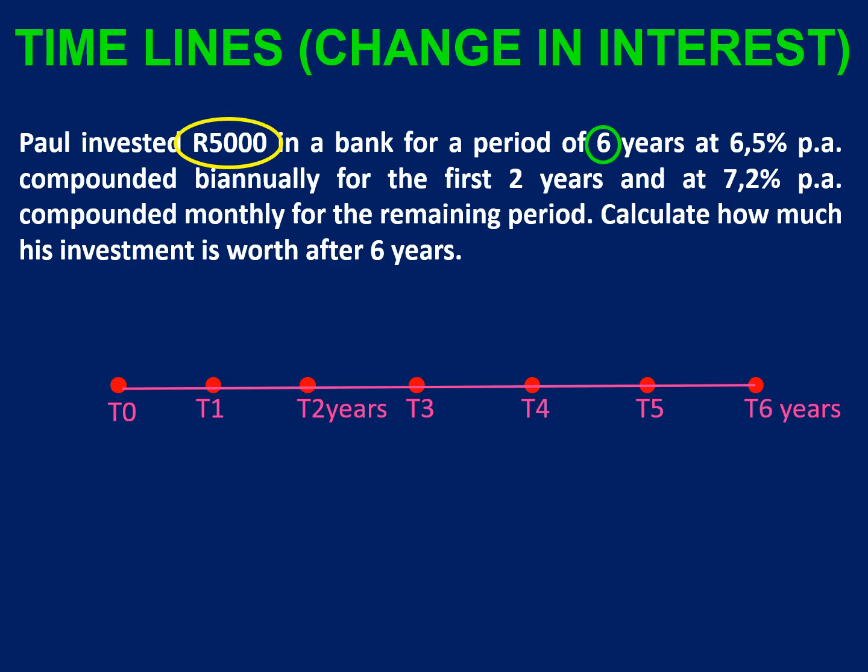So our timeline is for a full six years. Five thousand rand goes in at the beginning and it's there for two years at 6.5%.